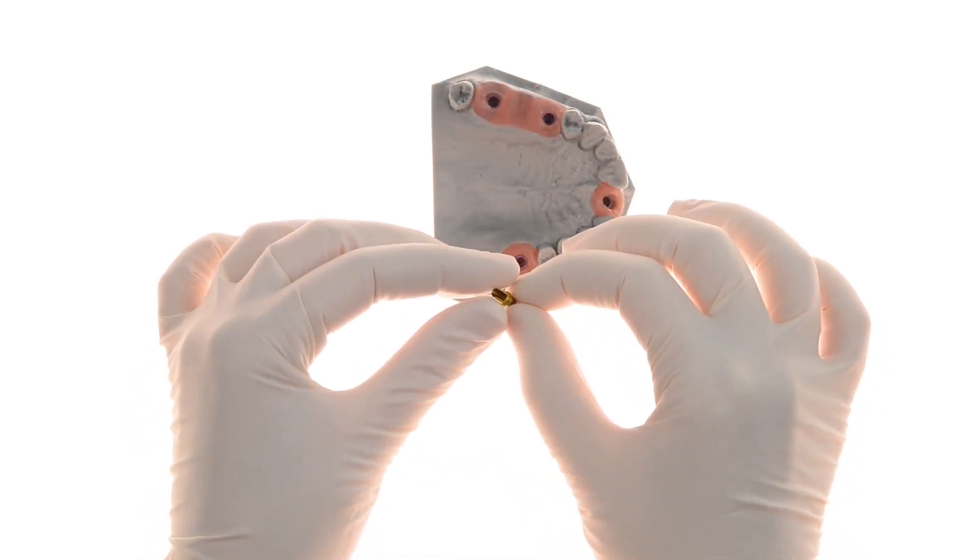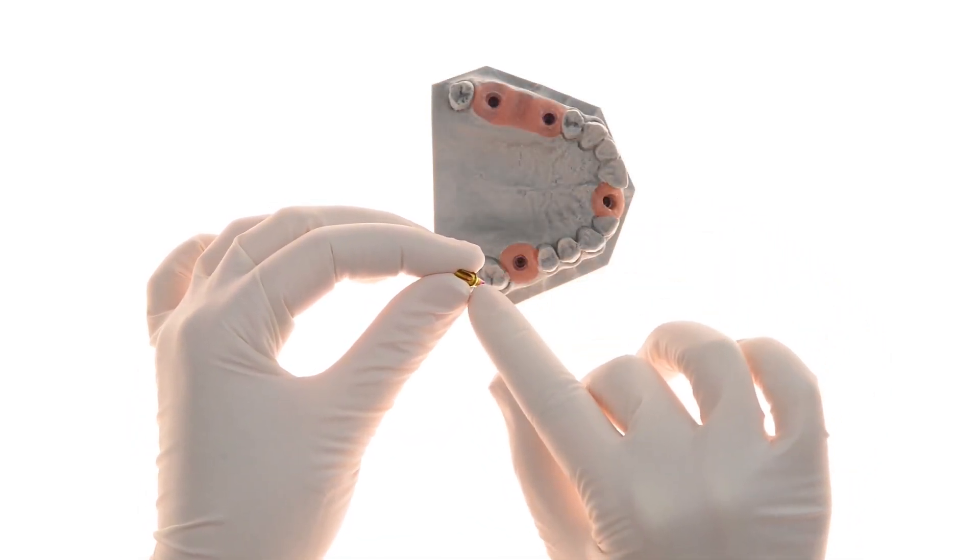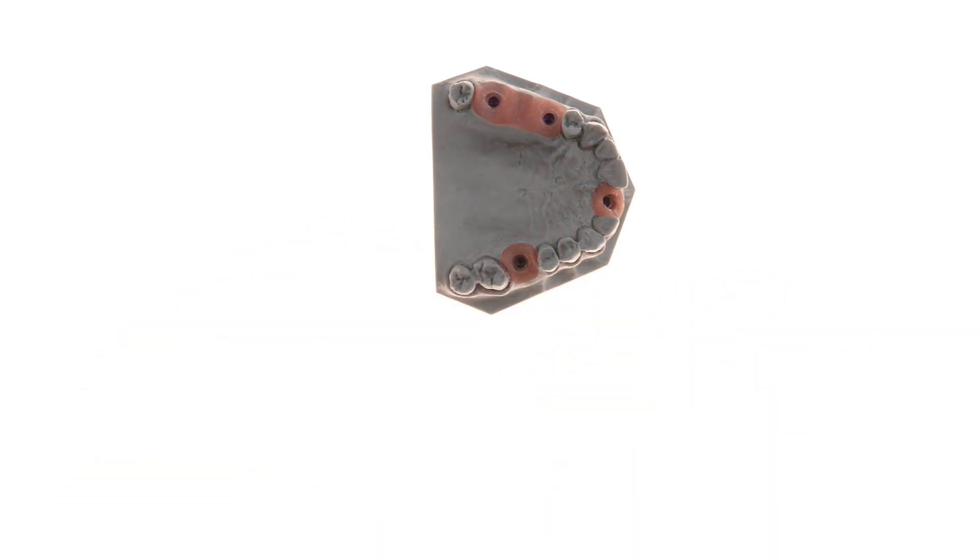This is the unique MIS EasyBase abutment. As you can see, it has a side cut which allows access of the angled screw and screwdriver.